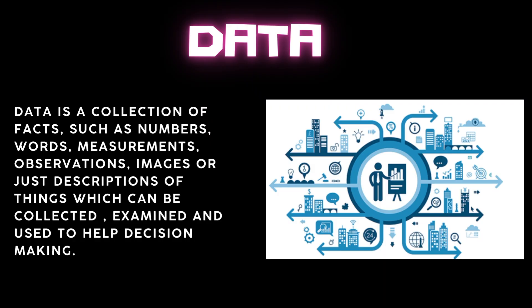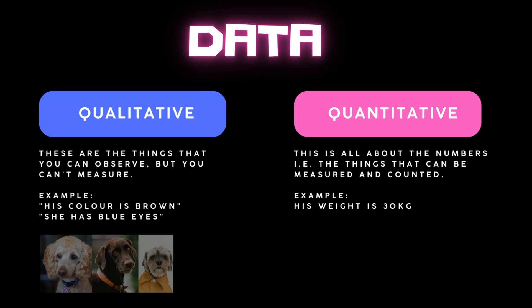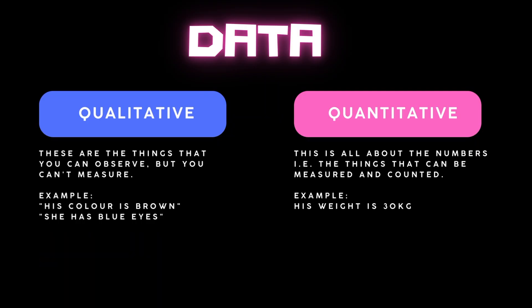Now that we know what data is and how we are surrounded by it all the time, let's understand different types of data. There are two different types: the first one is qualitative data and the second one is quantitative data. Qualitative data represents things that can be observed but you can't measure — for example, the color of somebody's hair, which can be brown, black, or white, or the color of somebody's eyes, which can be blue, black, or green.